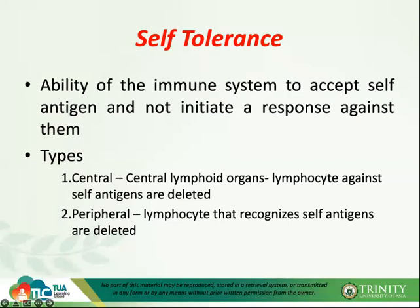Autoimmune diseases can also be due to endogenous and environmental factors such as hormonal influences and tissue trauma or release of cryptic antigens. Cryptic antigens are hidden antigens in our tissue that, when released, elicit an immune response that attacks our own cells and tissue. Autoimmunity can also be caused by microbial infections.